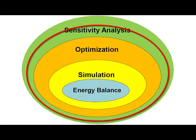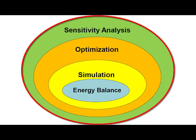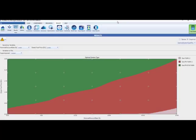In HOMER, we call these scenarios sensitivity cases. They represent the results of individual optimizations. The sensitivity analysis in HOMER is a set of many optimizations that HOMER will perform in a single run when you hit calculate. To put it simply, the best way to utilize this powerful engine is to input all known variables and possibilities to determine the optimal system architecture for all possible sensitivity cases.